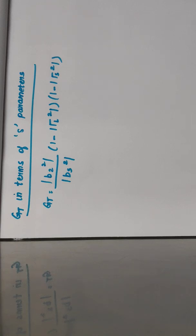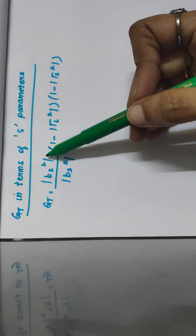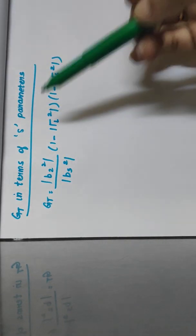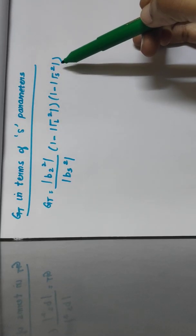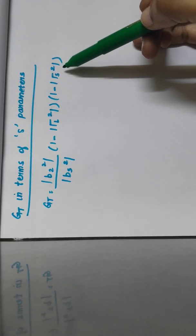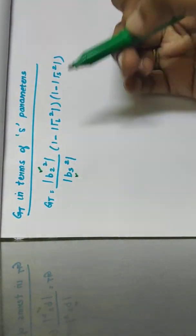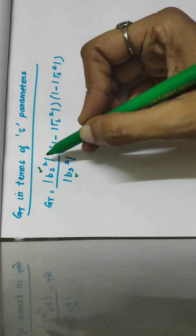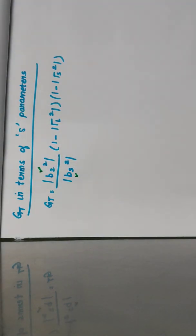In this short video, let us derive the transducer power gain Gt in terms of S parameters. This is the formula we have already derived for Gt: it is |B2|² / |Bs|² · (1 - |ΓL|²) · (1 - |ΓS|²). To derive in terms of S parameters, we need to find what B2 and Bs are, and substitute in this formula.